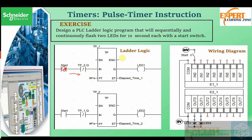After timer one's one second elapses, the timer output goes low. At that instant, the normally closed contact closes again, allowing timer two to start. Timer two starts, LED two comes on, and LED one goes off. After one second, timer two goes off, and then a pulse comes back to start timer one again. They constantly switch on and off for one second each. Timer two determines the off state of LED one, and timer one determines the off state of LED two — and vice versa for the on states.